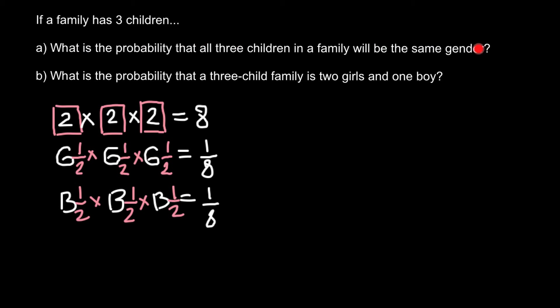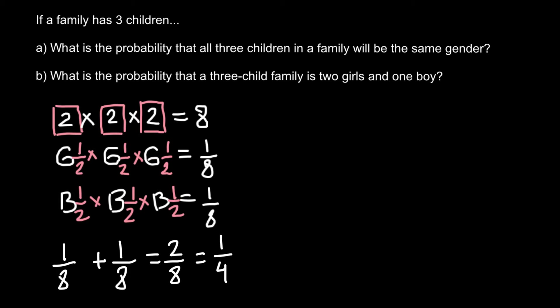In order to answer Question A, we combine these two independent probabilities: one eighth probability that all three children are girls, plus one eighth probability that all three children are boys. This gives us two out of eight, or one quarter. So the probability that a family of three children has all three children of the same gender is 25%.